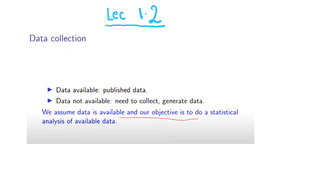Now, data collection. If data is already available, we can use published data. If data is not available, we need to collect or generate data. We assume data is available and our objective is to do a statistical analysis of that available data.